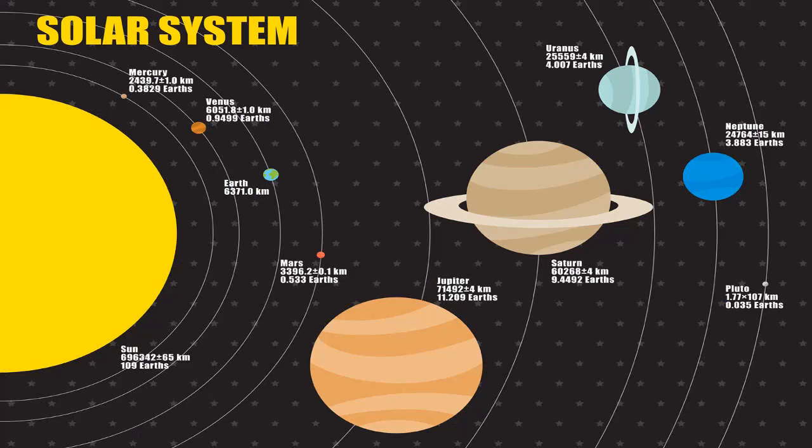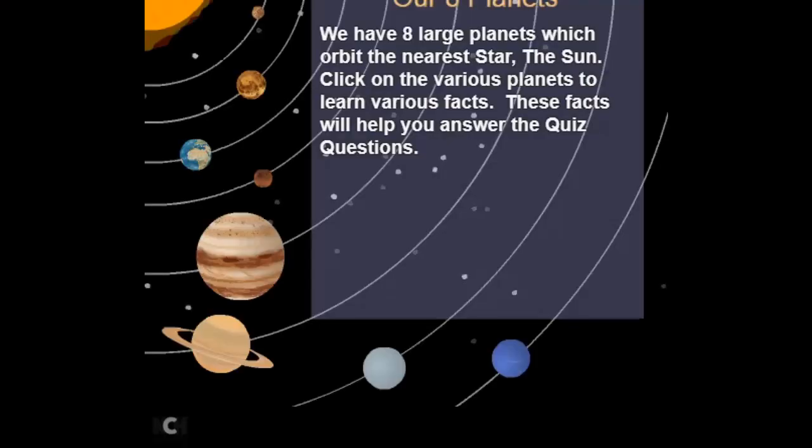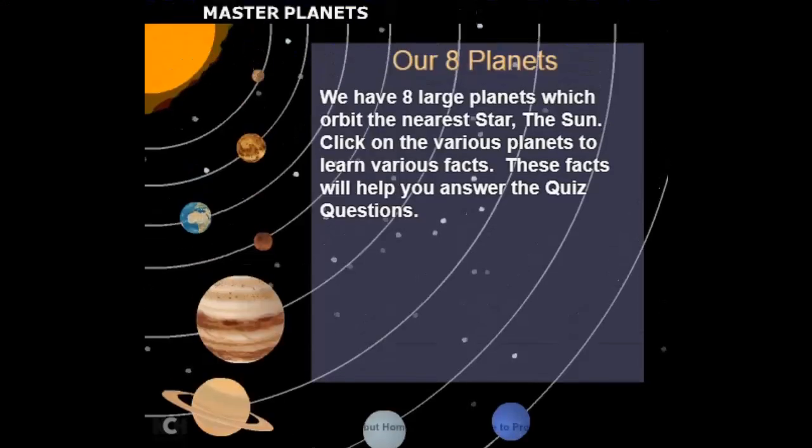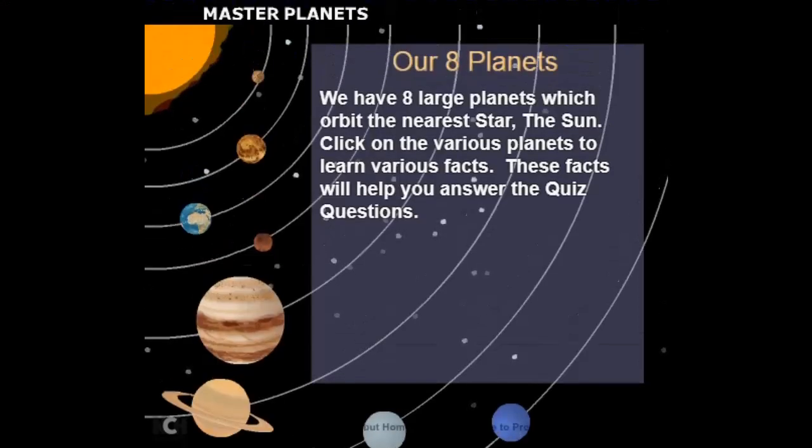The Terrestrial and Jovian Planets. The planets fall quite nicely into two groups. The terrestrial planets are Earth-like planets: Mercury, Venus, Earth, and Mars.